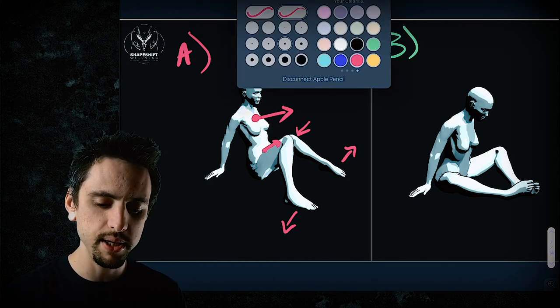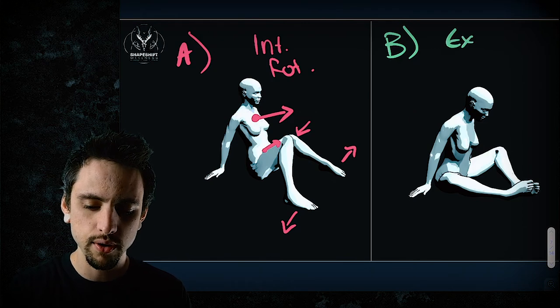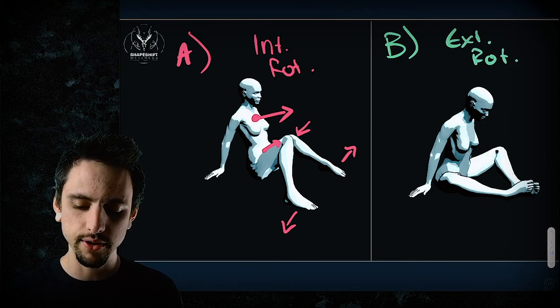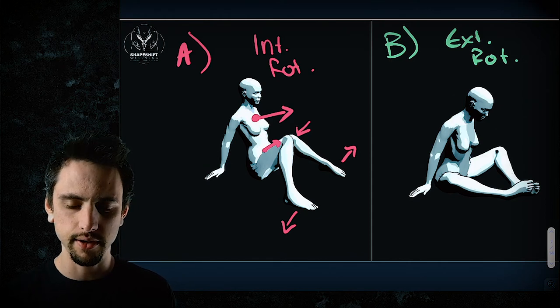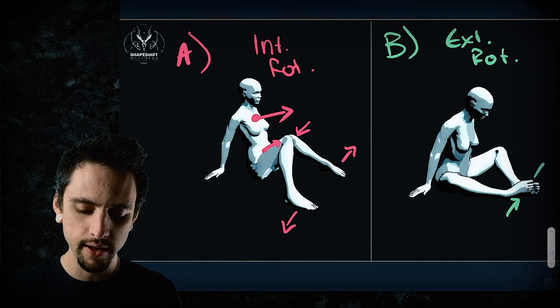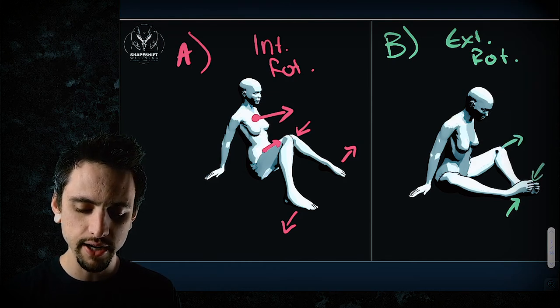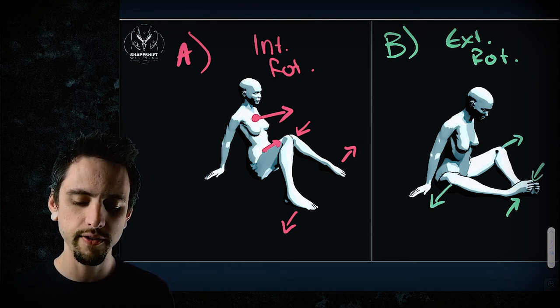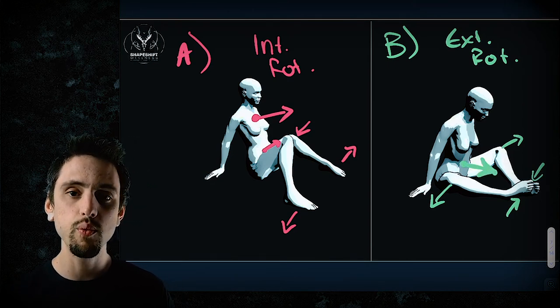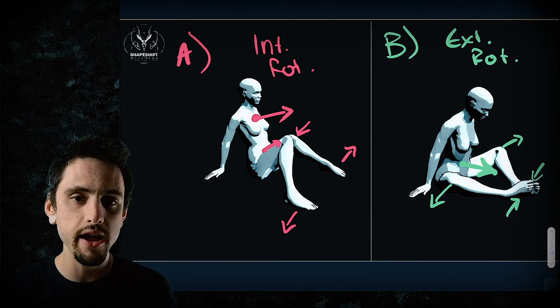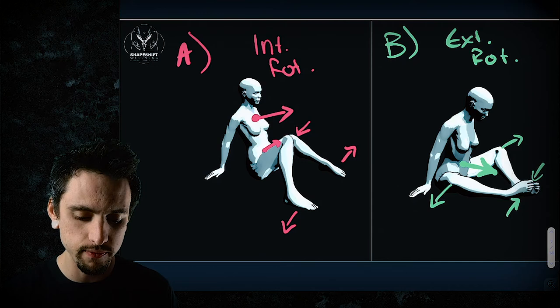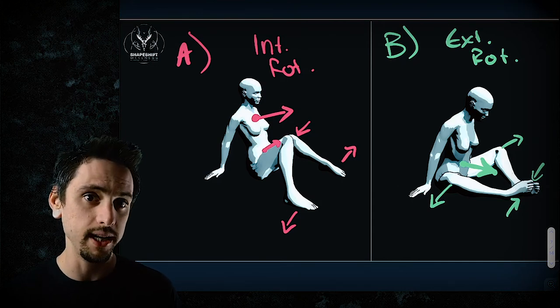So now let's try the opposite. Let's try B where we do external rotation. And so it's supta baddha konasana, except without the supta, you're not laying down. So feet together and knees externally rotated, moving away from each other. And you'll see that you can take your belly button and you can move it forward. You have, you just have physically way more space because your bones, your leg bones, your femurs are just not in the way anymore.